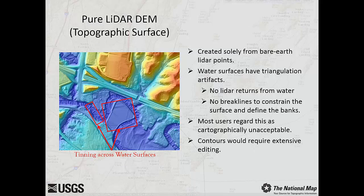A pure LiDAR DEM is a representation of the surface created strictly from the LiDAR point cloud data. This type of DEM is problematic for mapping purposes due to the unacceptable appearance of water surfaces. Water surfaces do not provide LiDAR return, which results in the triangulation artifacts, or tinning, that you see in this image. The pure LiDAR DEM has no brake lines to constrain the water surface and define the banks, rendering this type of DEM cartographically unacceptable.